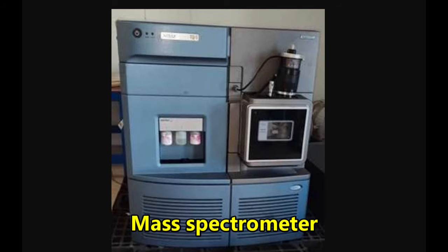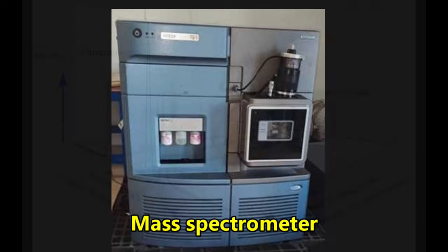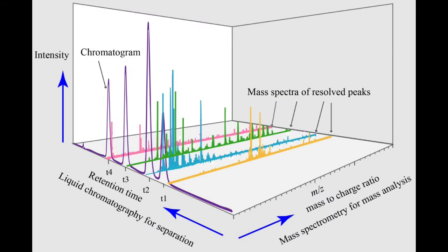Once an analyte elutes from the column, it flows directly into a detector, which can pick up when the analytes come off the column. If the detector is a mass spec, it will not only give us the retention time of the analyte, but it will also give us its molecular weight. If the retention time of the analyte from the unknown sample matches the retention time of a reference sample and the molecular weight is correct, then we can be pretty confident about the identity of the compound.